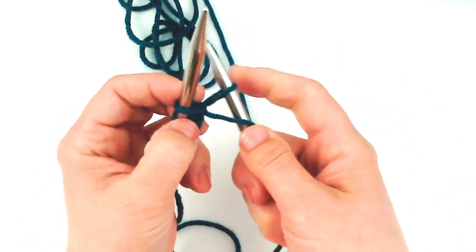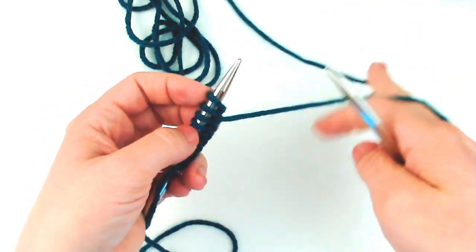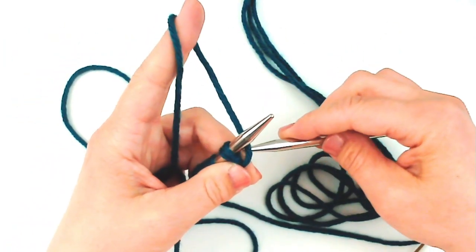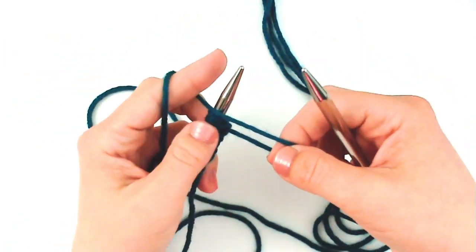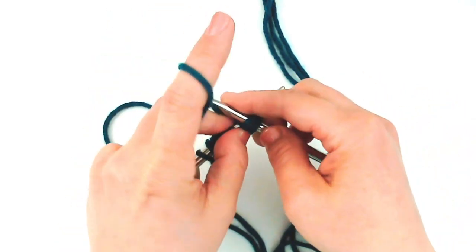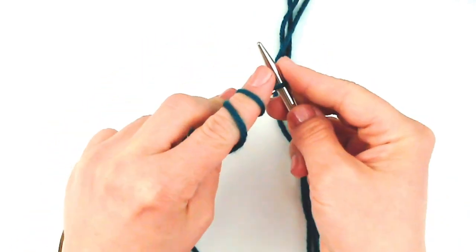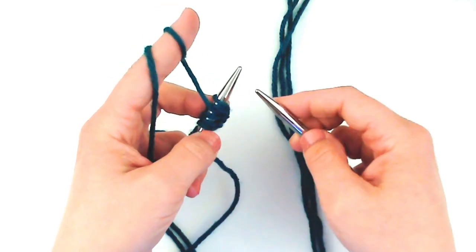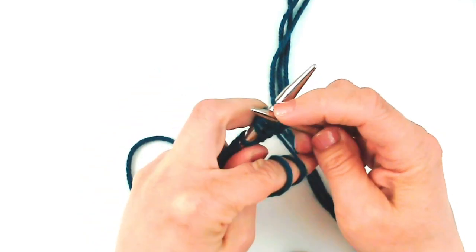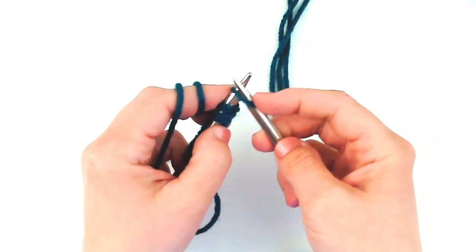So you continue in this method, putting the new stitches onto the left-hand needle until you have the number of stitches you need. I'm going to demonstrate in continental style as well. I come with my yarn in the front of the work, I go underneath the first stitch, wrap the yarn for purl, and come to the back, and then swing that stitch onto the left-hand needle. So I come into the stitch, wrap the yarn for purl, come through, and then slide that on.